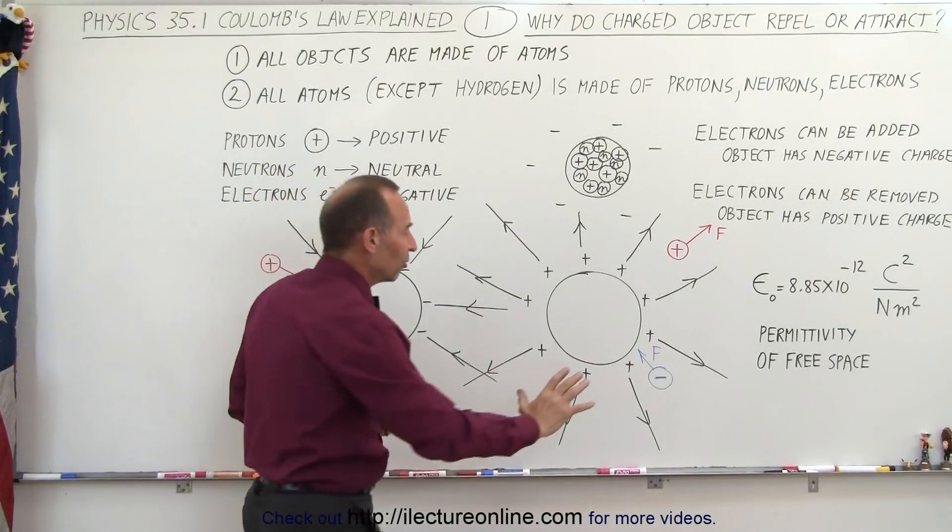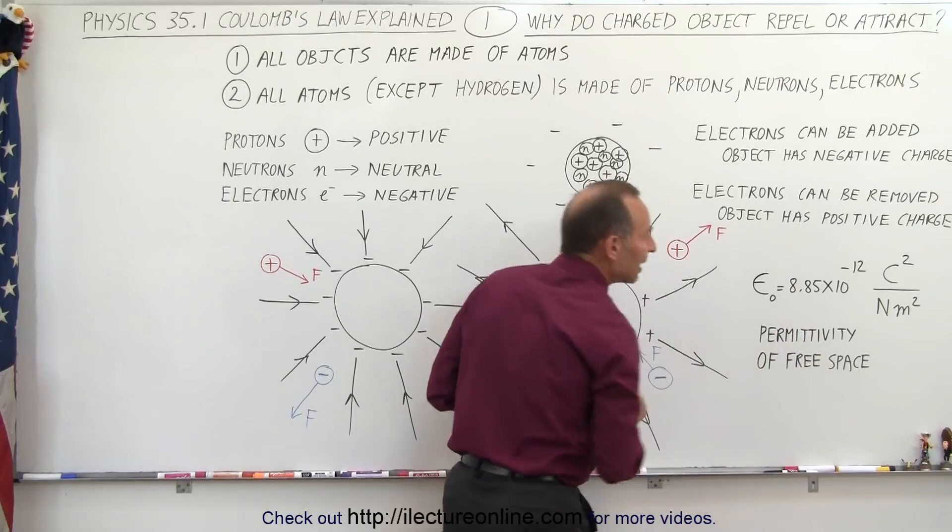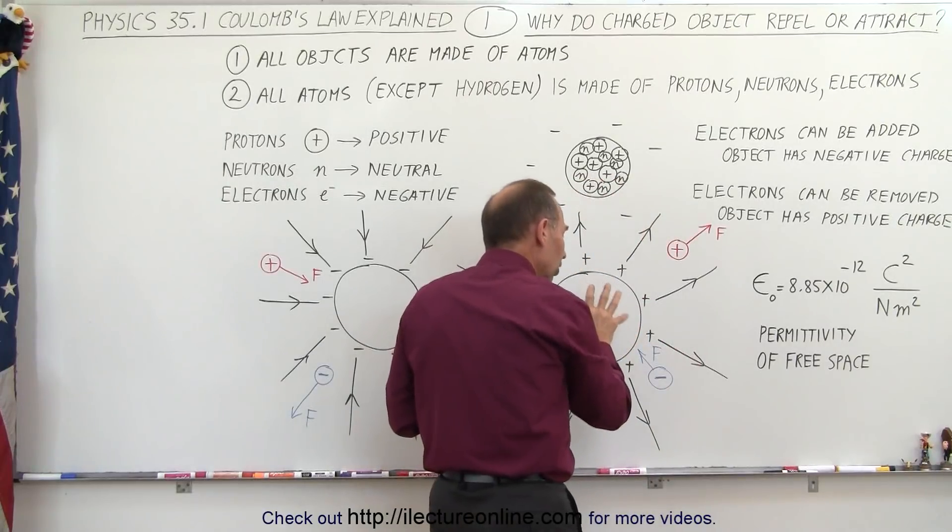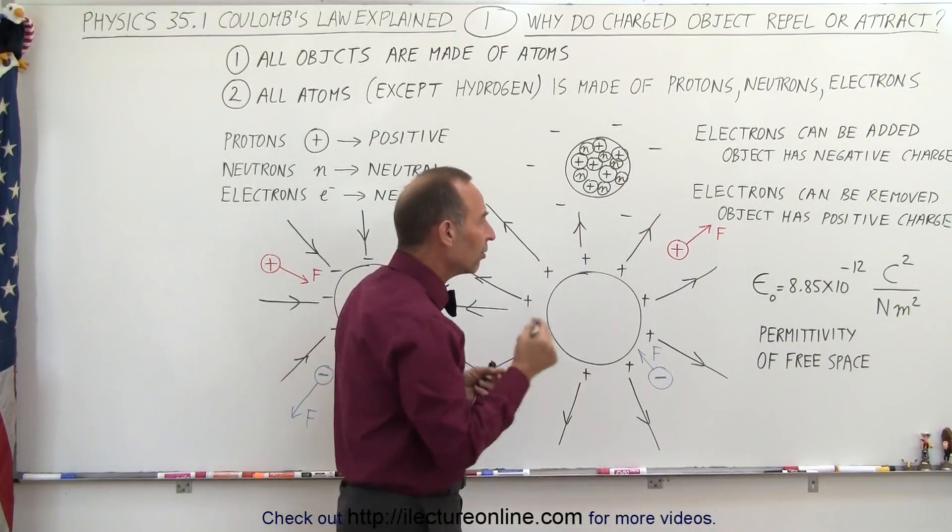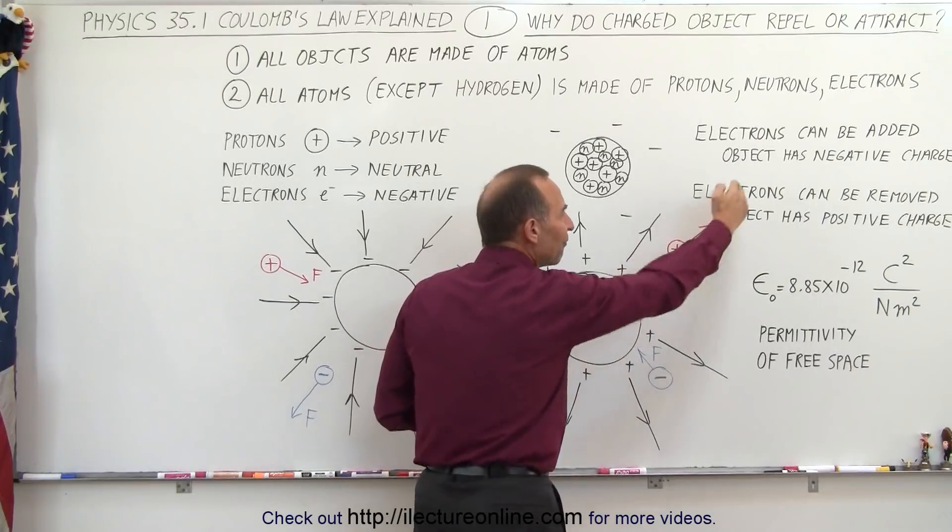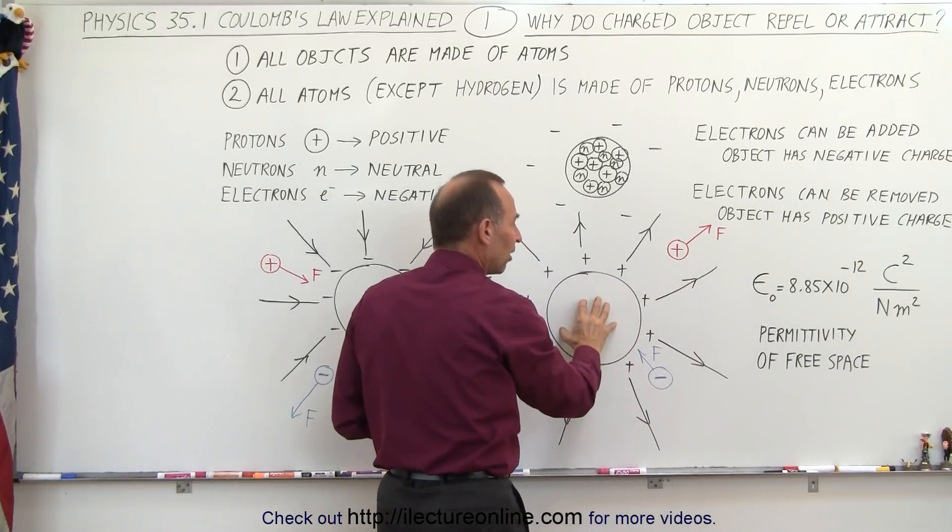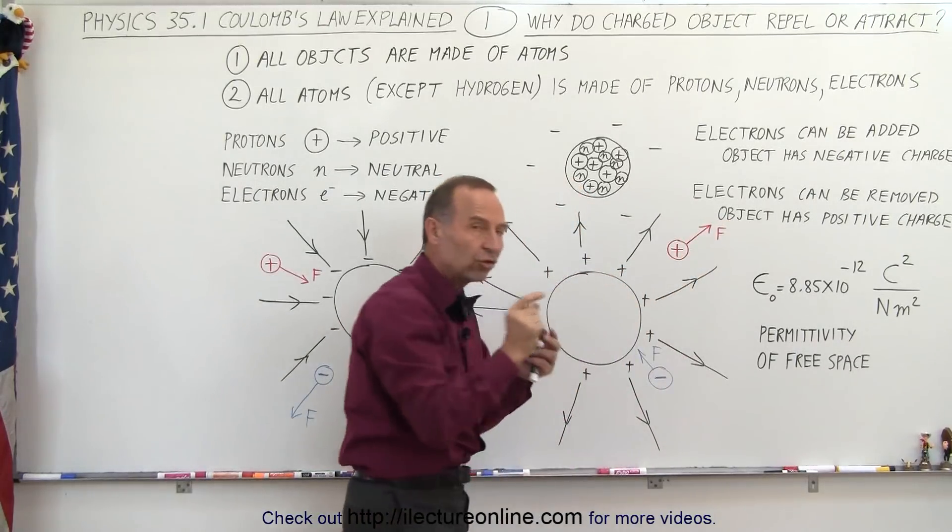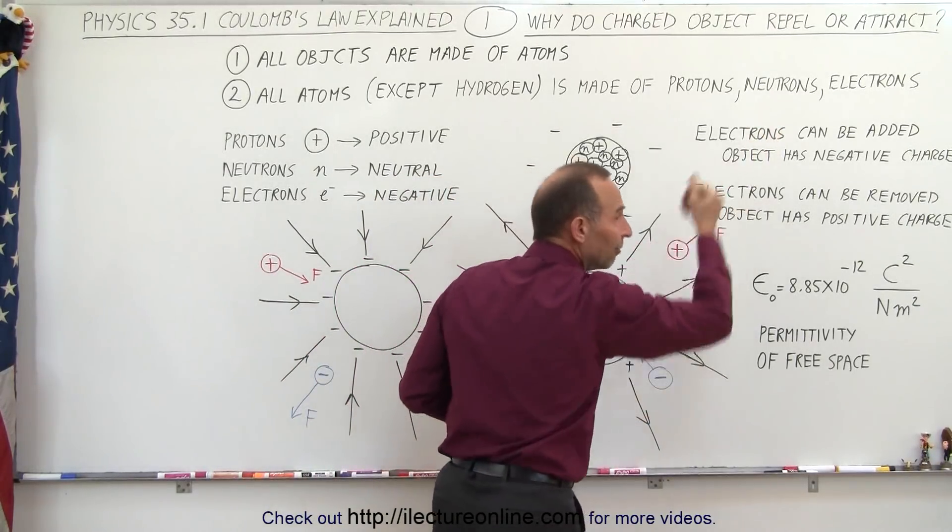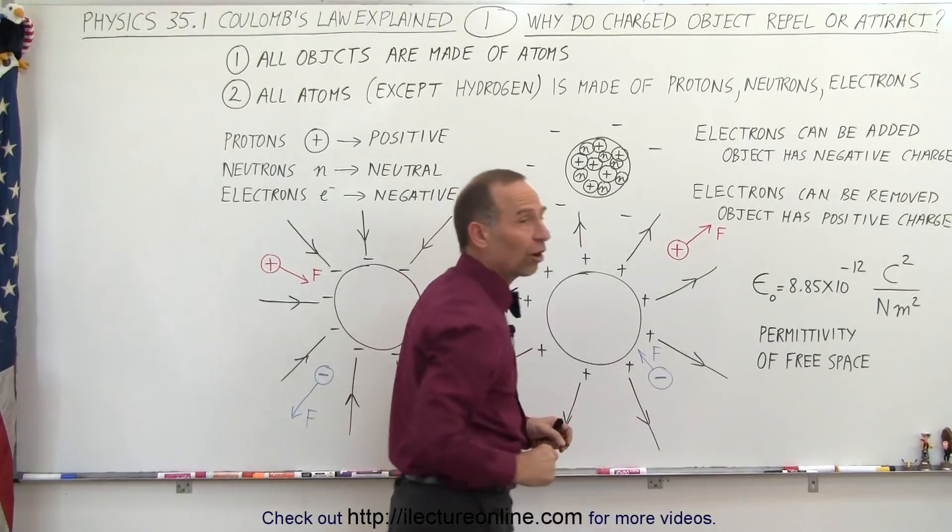What that means is that the space around the object is changed somehow. We change space because space has what we call permittivity, the permittivity of free space constant. And because of that, by putting a charged object in space, it affects space around it in such a way that if you take another small positive charge and place it in that sphere of influence, there'll be a force of repulsion. This object that has a positive charge will be repelled by this object which has a positive charge. So positive test charges placed in the sphere of influence of a charged object will either move away from the object if it's a positive charge near a positive charge, or will be attracted to the object if it's a negative charge placed there.